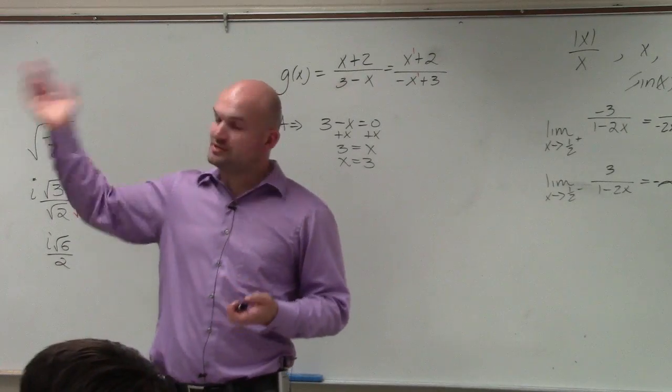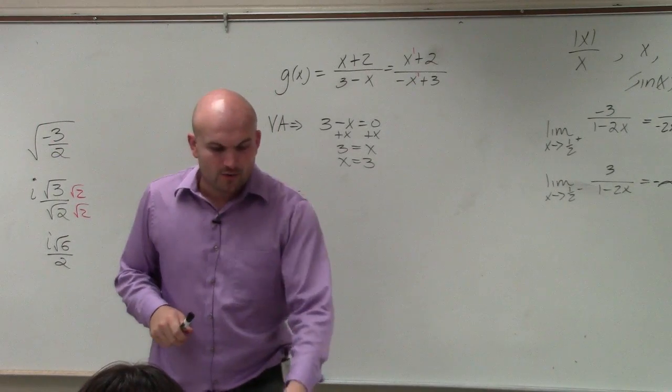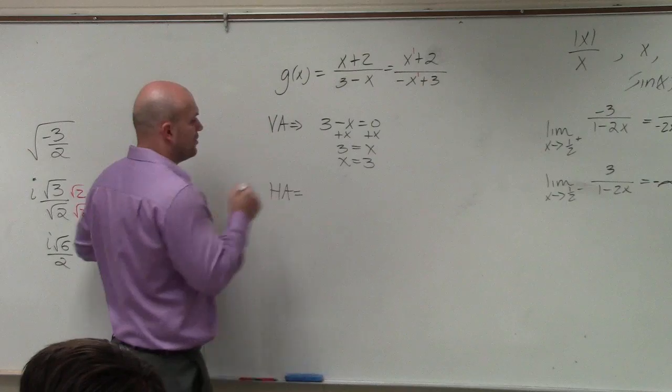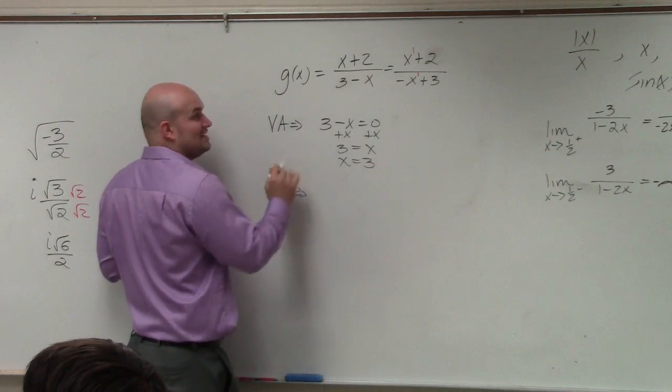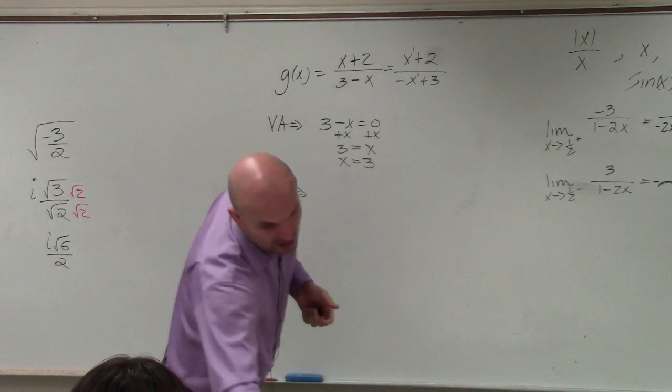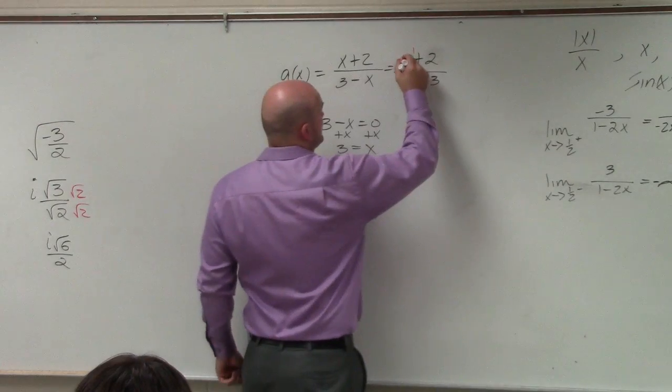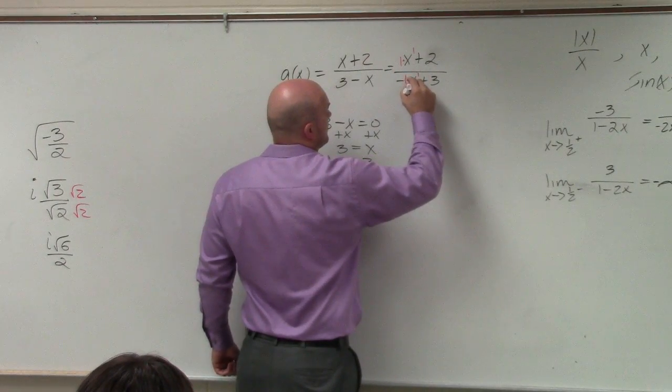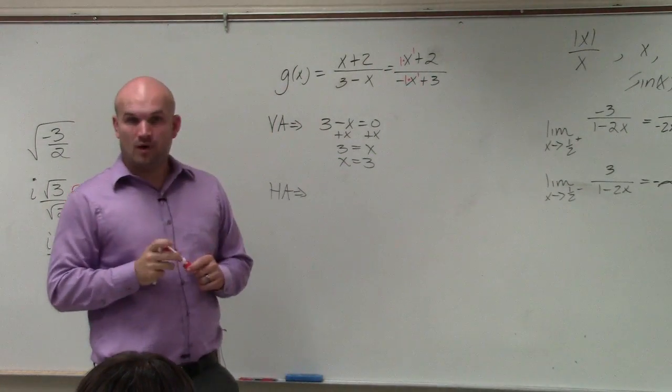If you guys remember from the notes that I had you guys write down last class period, when the degrees are exactly the same, the horizontal asymptote is just the ratio of the leading coefficient of the numerator divided by the leading coefficient of the denominator, which we can see is one and negative one.